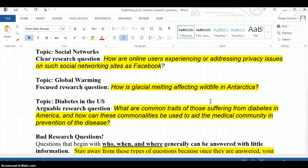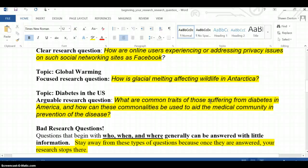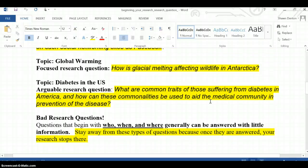What type of privacy issues are they running across? What type of countermeasures are they using in regards to privacy issues, etc.? We go back down to the third one. Topic, diabetes in the U.S. An arguable research question. What are common traits of those suffering from diabetes in America? And how can these commonalities be used to aid the medical community in prevention of the disease?